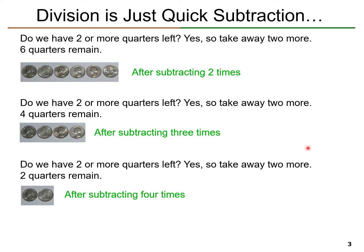Ask yourself: do we have 2 or more quarters left? Yes, we got 4 left. 4 is more than 2, so we take away 2 more quarters. And then we have 2 remaining. So, we have 1, 2 quarters remaining after subtracting 4 times.